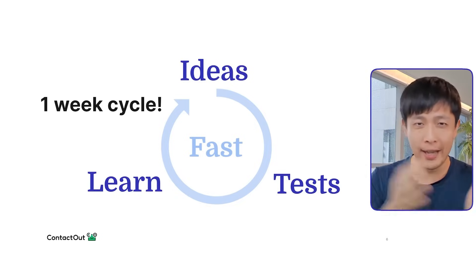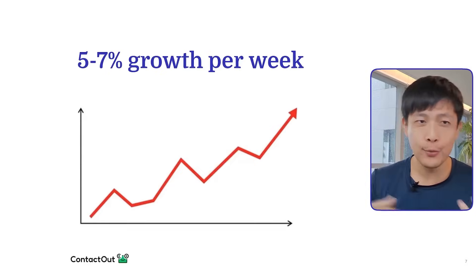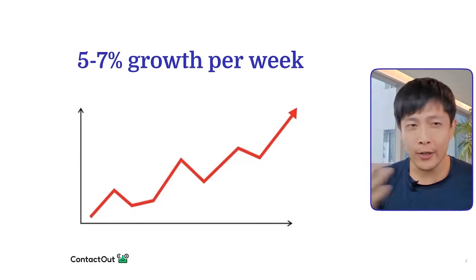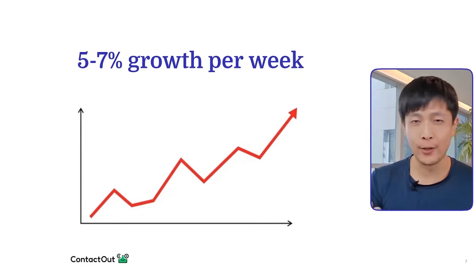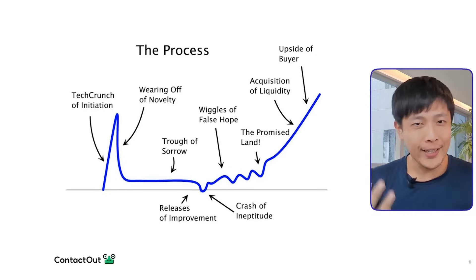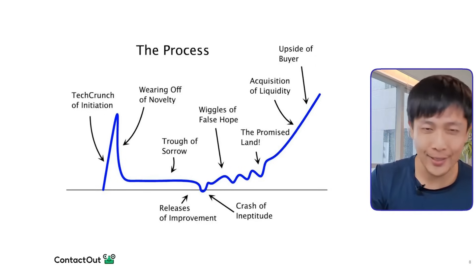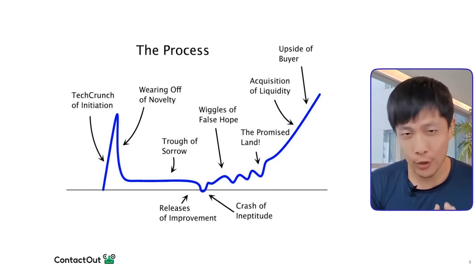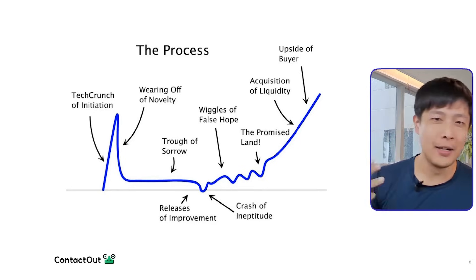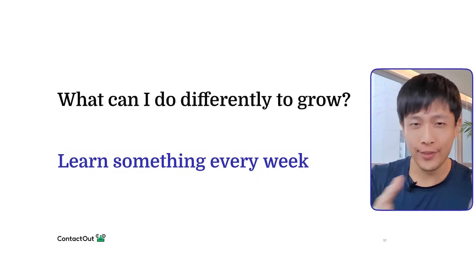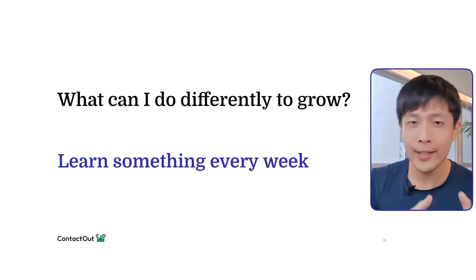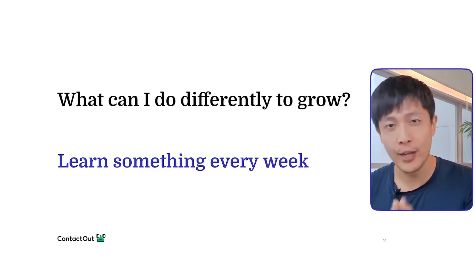We just keep repeating this process every week — learnings, ideas, tests — and this is what leads a startup to grow. Y Combinator advises 5% to 7% growth per week. However, for ContactOut and most startups you won't hit this. Instead, your growth might look like you won't grow for months or even years and then suddenly grow by 10 times. It is helpful to set a goal of growing 7% per week even if you don't achieve it. What's more important is that when you don't achieve it, you ask yourself: what can I do differently next week to grow? What did I learn? You aim to learn something new every week.